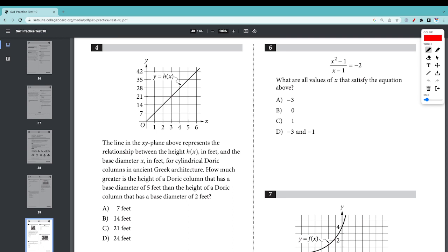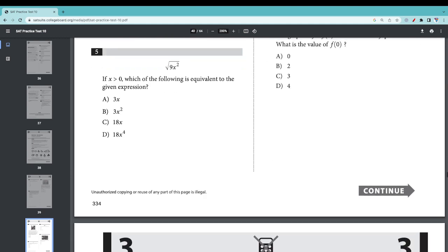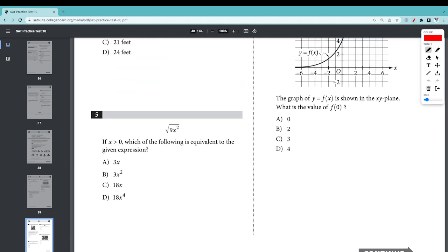x is the base diameter in feet, h(x) is the height. A base diameter of 5 has a height of 35, and base diameter of 2 is 14. How much does it compare? 35 minus 14, that is 21. The answer is C.